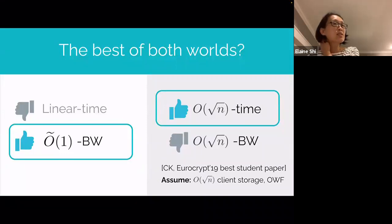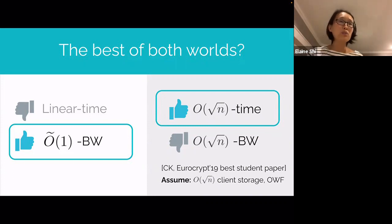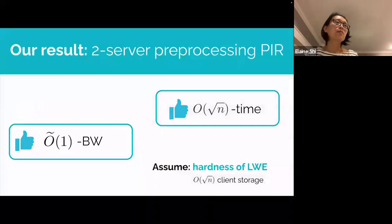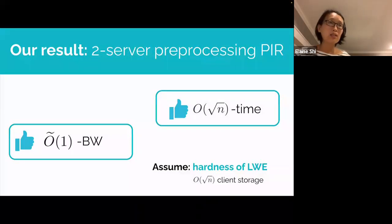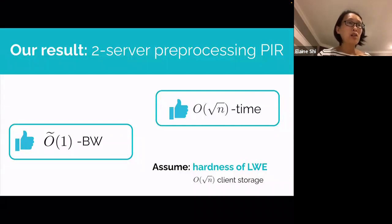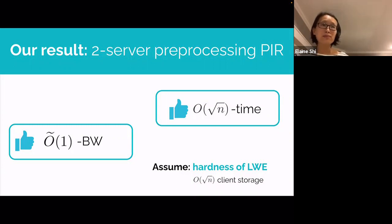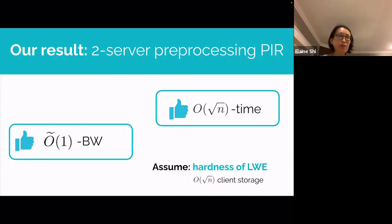So the most natural question is: can we get the best of both worlds? That is, can we get sublinear online computation with preprocessing, but still preserve the polylog bandwidth just like classical PIR? In our work, we show that indeed we can achieve this. To get this result, we need to assume that LWE is hard, which is the standard lattice-based hardness assumption. Also, due to an elegant lower bound proven by Corrigan-Gibbs and Kogan, our scheme is optimal up to polylog factors in the online computation, assuming the client has square root n storage and the server stores the database in the original format without any encoding.